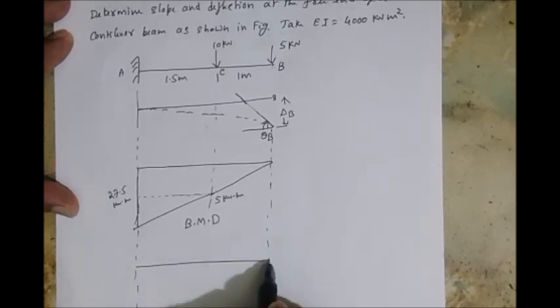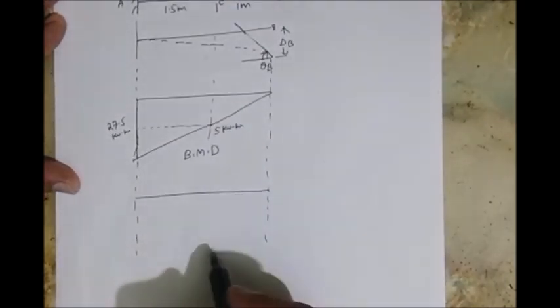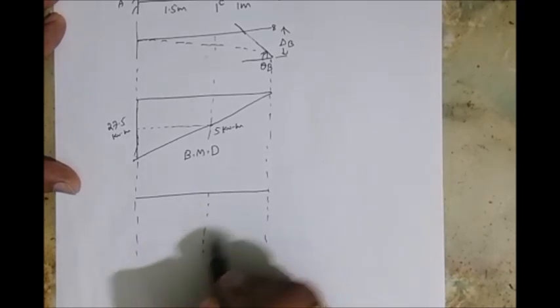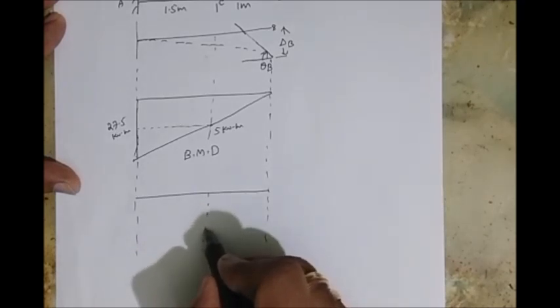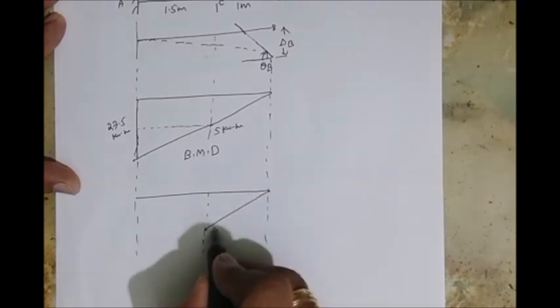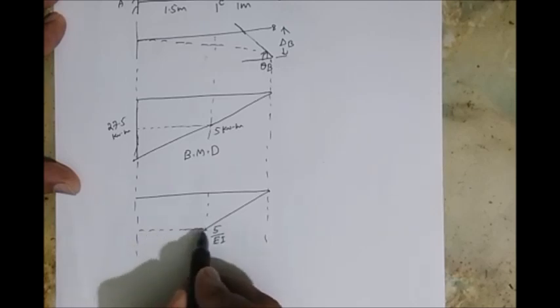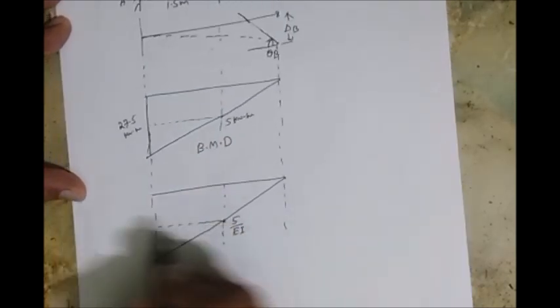So in this case it's a very simple one. So moment at C is 5, so this is 5 divided by EI because EI is constant. Then at the end A, the total is 27.5 by EI.